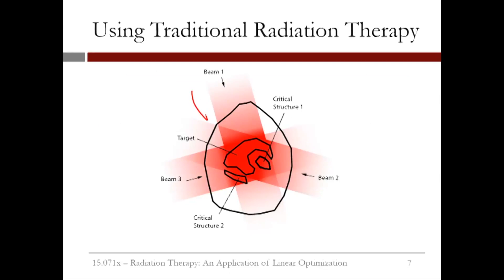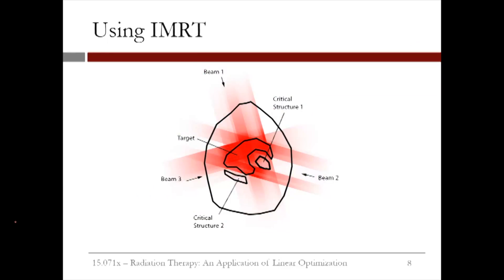In this image, we have a person's body outlined in black, and then the target, or tumor, and two critical structures, also outlined. We would like to maximize the radiation to the target while minimizing the dose to healthy tissue, and especially to the critical structures. Using traditional radiation therapy, each of the three beams has the same intensity throughout. So to deliver enough radiation to the tumor, we also have to deliver a significant amount of radiation to the critical structures and other healthy tissue. But by using IMRT, we can change the intensity throughout each beam to make it non-uniform. Some pieces of the beam will have a higher intensity than others, allowing us to deliver the necessary radiation to the tumor while minimizing the total radiation to healthy tissue, so the critical structures get significantly less radiation.